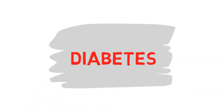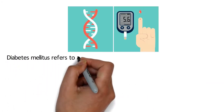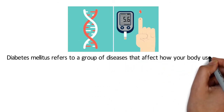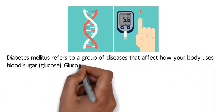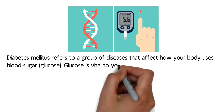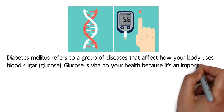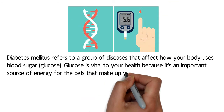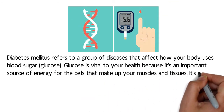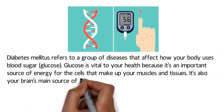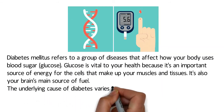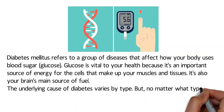Today's topic: diabetes. Diabetes mellitus refers to a group of diseases that affect how your body uses blood sugar glucose. Glucose is vital to your health because it's an important source of energy for the cells that make up your muscles and tissues. It's also your brain's main source of fuel.